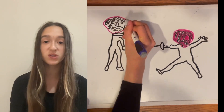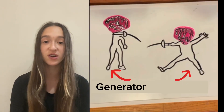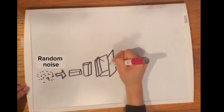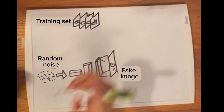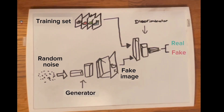They do this by having one model producing fake data that mimics the real world — called a generator — and the other is called the discriminator, and that one detects this fake data. In other words, the generator is making fake sneakers and trying to pass them off as real, while the discriminator judges them against real sneakers.